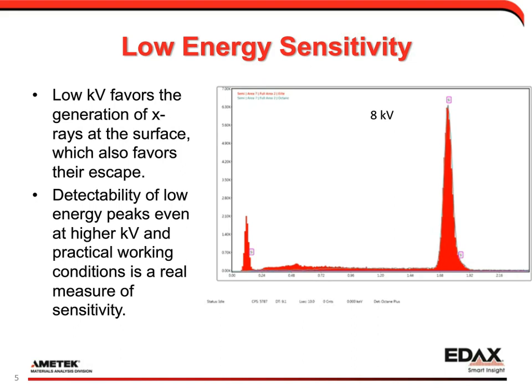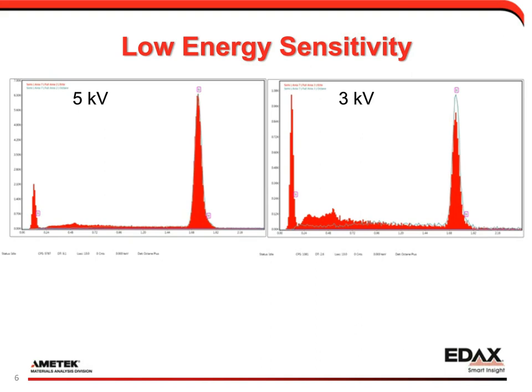Walking through examples at varying KV — we see 10 kV, then 8 kV. The silicon L line, the low energy line, has grown in relation to the silicon K line. This ratio of the low L line to the high K line is important. Looking at 5 kV and 3 kV side by side, as we go lower it's easier to detect these lower energy lines because they favor escape through the sample. At 3 kV we have about equal peak intensity between the L line and the K line. This example was originally planned to show an overlay of the silicon nitride window versus the polymer window, but the polymer window at most conditions didn't have much excitation of the L line.